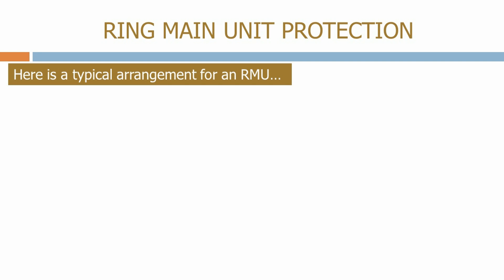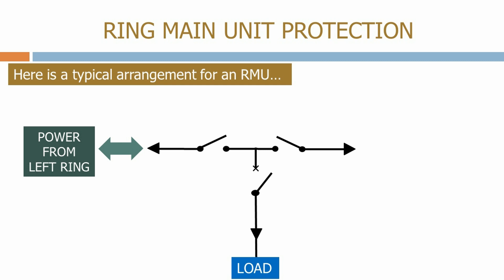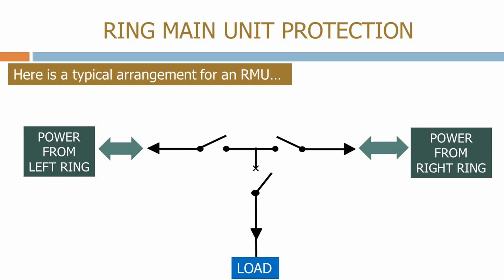Here is a typical arrangement for an RMU. They normally consist of a circuit breaker connected to the feeder which supplies the load, and two manually operated isolators to switch the power from the ring. On the left hand side we have the cable sealing end which connects the power from the left hand ring. On the right hand side we have the cable sealing end to connect the power from the right hand ring. Using this arrangement we can close the left hand isolator and the circuit breaker to feed power from the left hand ring.